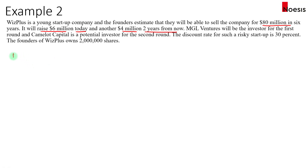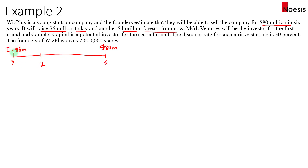Let's draw the timeline up to year six. The exit value is eighty million in six years' time, and the funding happens in two stages: the investment today at year zero will be six million dollars, and then the investment in year two will be four million dollars. We'll treat this just like a present value question.